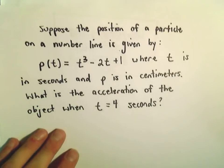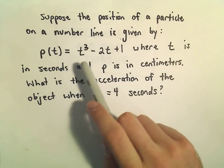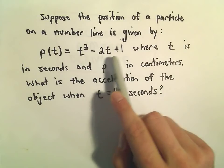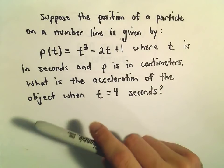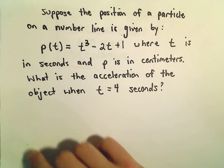In this video we're going to look at another example related to acceleration. So here we've got the position of a particle on a number line. It's given by p(t) equals t to the third minus 2t plus 1. t is in seconds and p is in centimeters. We want to know what the acceleration of the object is when t equals 4.